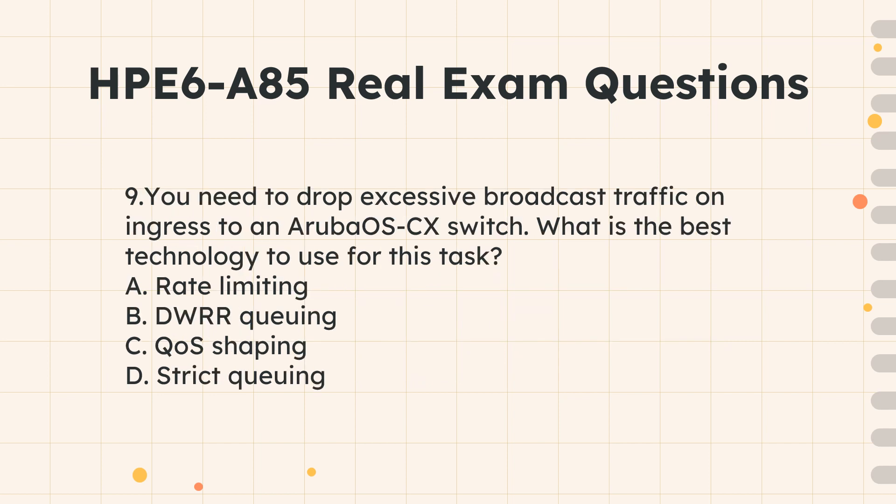Question 9. You need to drop excessive broadcast traffic on ingress to an Aruba CX switch. What is the best technology to use for this task? A. Rate limiting. B. DWRR queuing. C. Coarse shaping. D. Strict queuing.